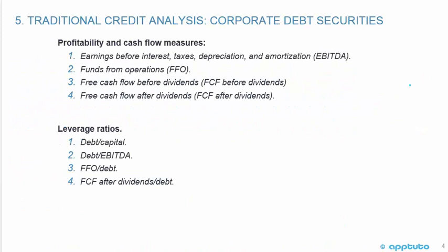Continuing with traditional credit analysis of corporate debt securities, we look at profitability and cash flow measures such as EBITDA, funds from operations (FFO), and free cash flow before and after dividends — all of which indicate the ability to service debt. Specific leverage ratios used here include debt-to-capital, debt-to-EBITDA, funds from operations divided by debt, and free cash flow to the firm after dividends divided by debt.